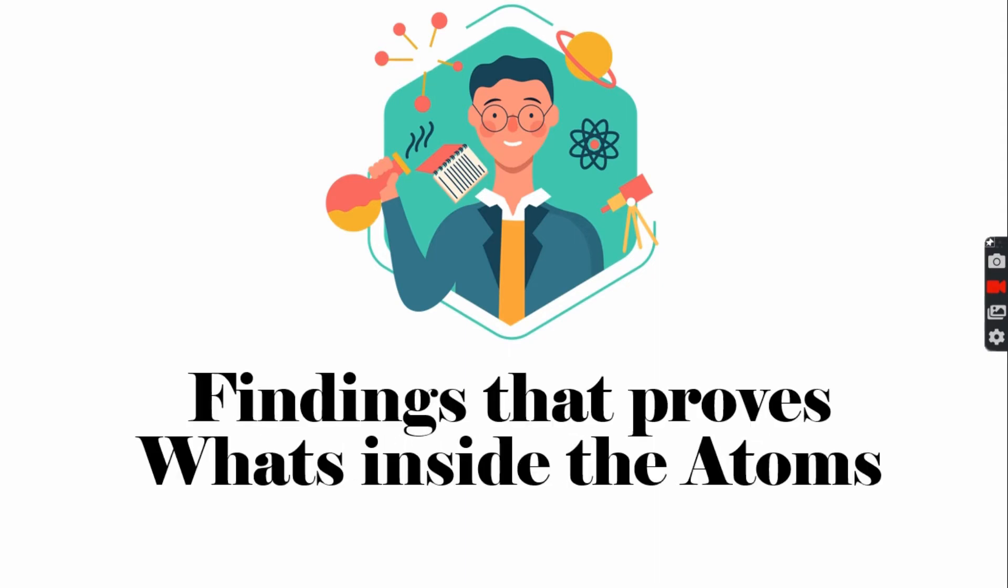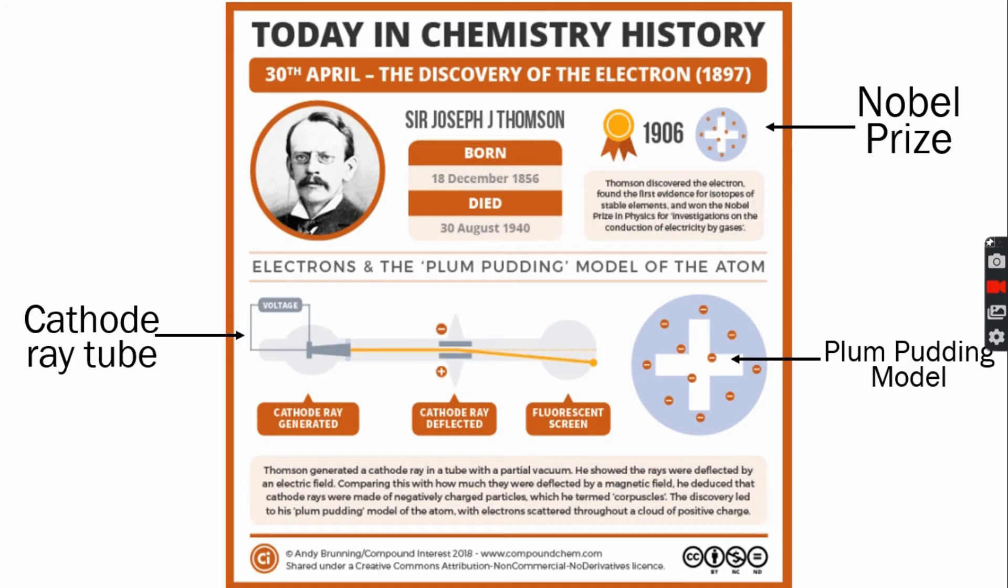Now we're gonna talk about findings that prove what's inside an atom. In 1897, Sir Joseph J. Thompson discovered the electron, which are negatively charged, and got a Nobel Prize. He used a cathode ray tube that resulted in a new model. The theory says the electron is embedded in a positive sphere, which was called the plum pudding model, because it looks like one.